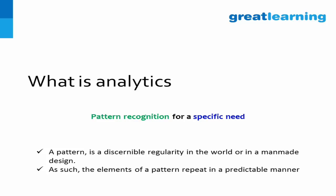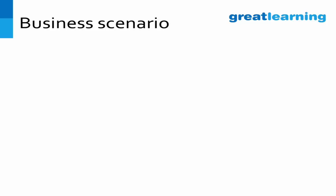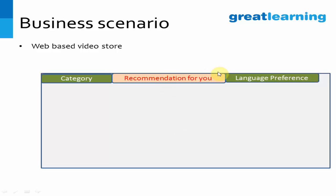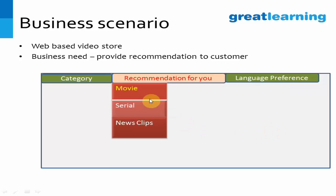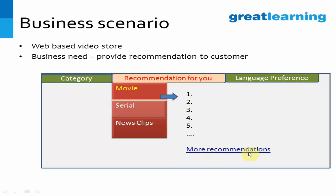Let me show you this same thing by an example. The business scenario is a web-based video store. That website stores videos of movies, serials, and news clips. You have been given the task of recommending videos to users. The user may provide preferences like language and content type — movie or serial. Your end goal is that when he selects a category, he should get a top 10 listing with a hyperlink to view more.